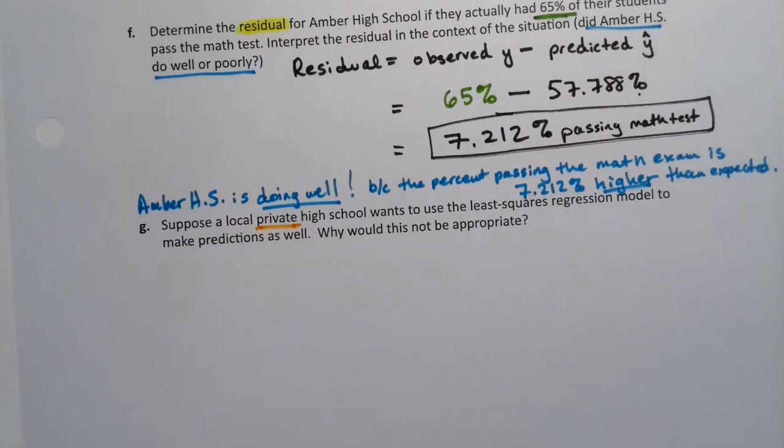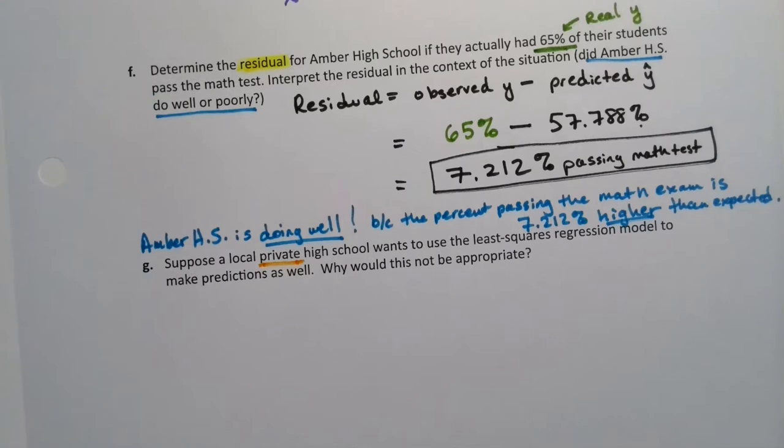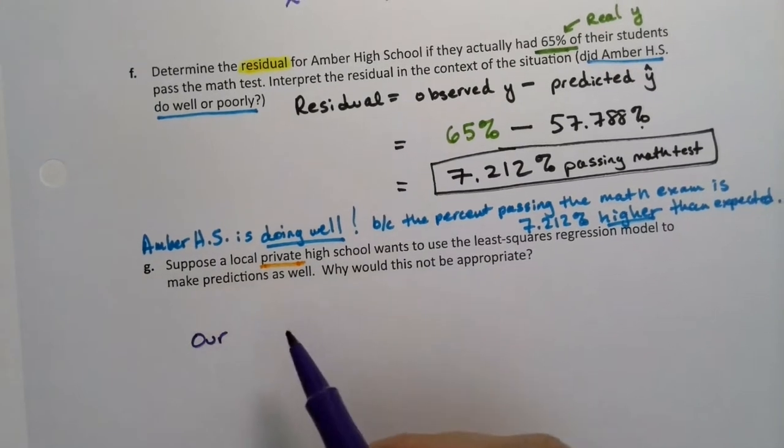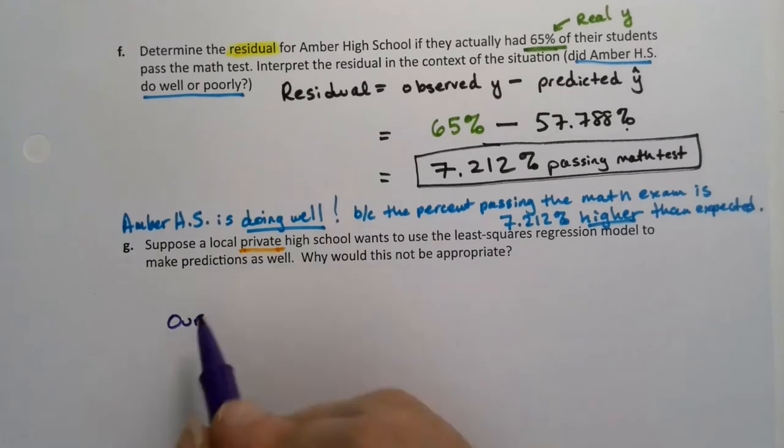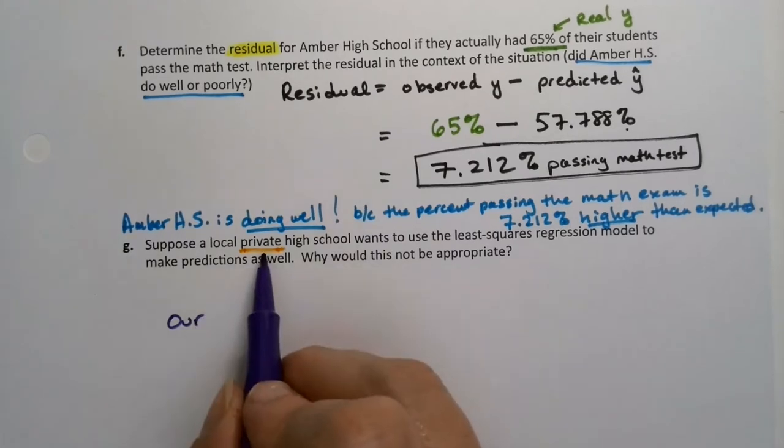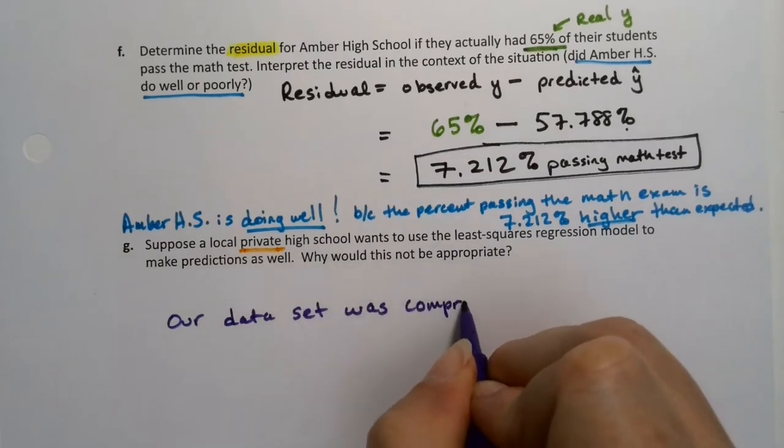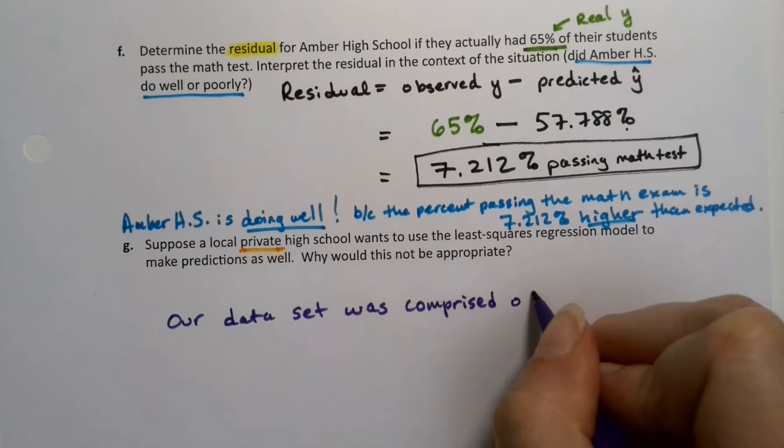So it would not be appropriate because all our data were from public schools and they have completely different rules and regulations for how that would work. So it's not a question of being outside the scope of the model. It's a question of being unfairly representing yourself or comparing yourself to local private schools. So our data set was comprised of only public schools.